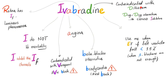D: I'm contraindicated with diltiazem — drug-drug interaction with CYP450 inhibitors. E: use me when the ejection fraction of the left ventricle falls below 35% and beta blockers are not enough.